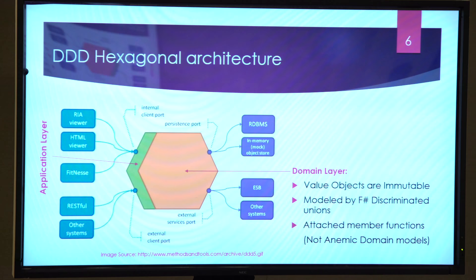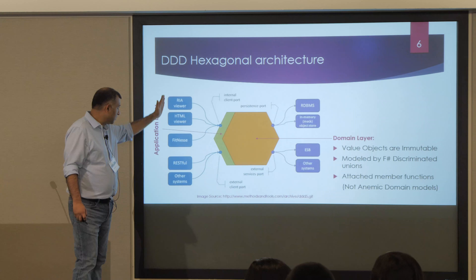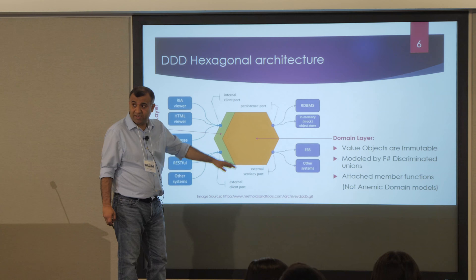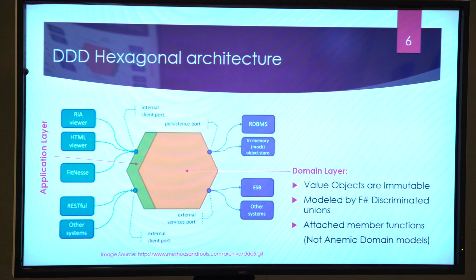A common architecture for DDD is hexagonal architecture, with four layers: the presentation layer, a thin application layer, the domain layer where the bulk of your code lives, and the persistence layer. It's called hexagonal because presentation and persistence are each split into two parts — your actual production services and your test stubs.